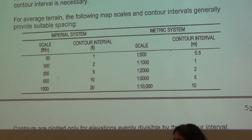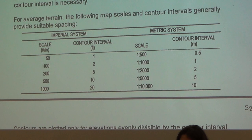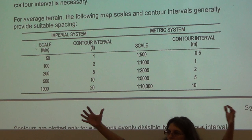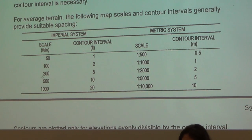Let's look at this important table. In the imperial system using inches and feet, on average terrain with a map scale of 1 inch equals 200 feet, or 1 inch equals 500 feet — can you read this? One inch equals 200 feet, one inch equals 500 feet. If you're working on average terrain with a scale of 1 inch equals 500 feet, your contour interval would be 10 feet.